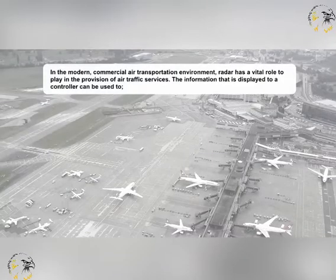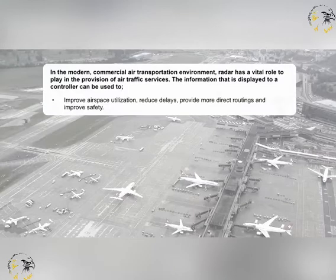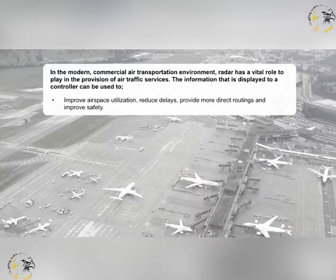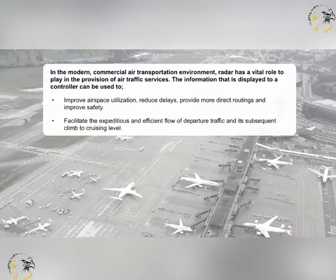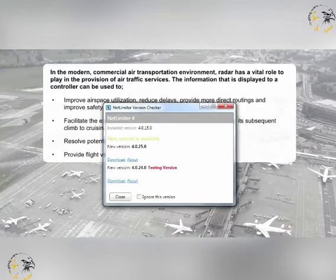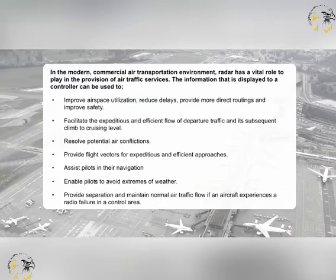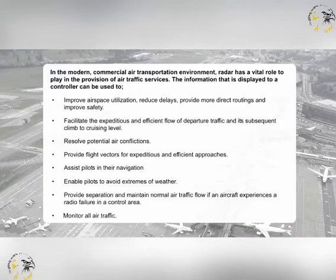In the modern commercial air transportation environment, radar has a vital role to play in the provision of air traffic services. The information displayed to a controller can be used to improve airspace utilisation, reduce delays, provide more direct routings and improve safety, facilitate the expeditious and efficient flow of departure traffic and its subsequent climb to cruising level, resolve potential air conflictions, provide flight vectors for expeditious and efficient approaches, assist pilots in their navigation, enable pilots to avoid extremes of weather, provide separation and maintain normal air traffic flow if an aircraft experiences a radio failure in a control area, and monitor all air traffic.